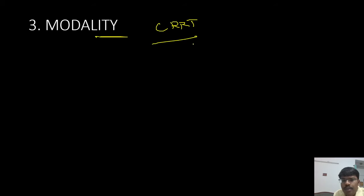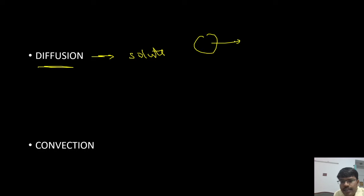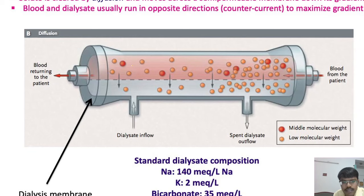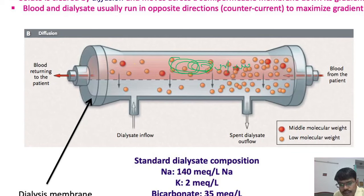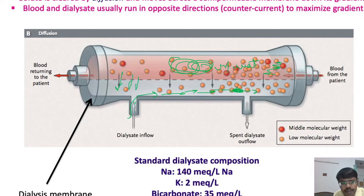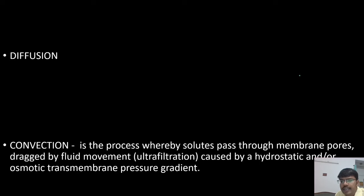To understand the modalities of CRRT, two concepts must be clear: diffusion and convection. Diffusion is the movement of solute from an area of higher concentration to lower concentration. For example, uremic toxins such as urea and creatinine are in higher concentration on the blood side; dialysate fluid flowing on the other side has a lower concentration of these solutes. By diffusion, solutes move from the higher-concentration area to the lower-concentration area. This simple diffusion is the basic mechanism in hemodialysis.